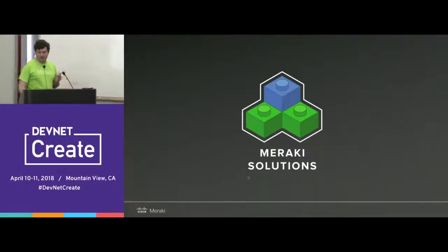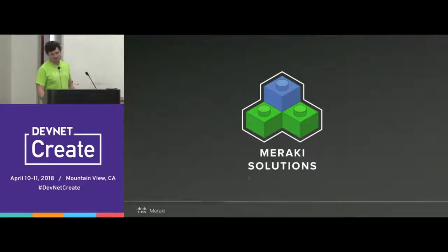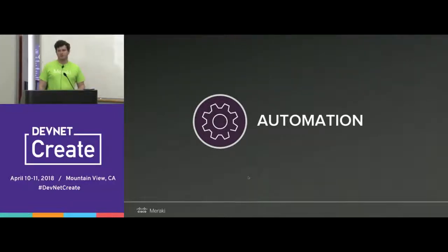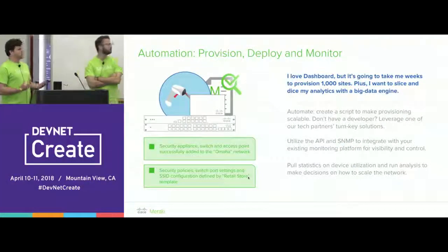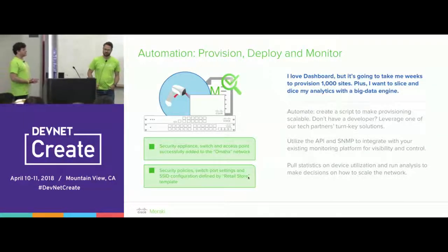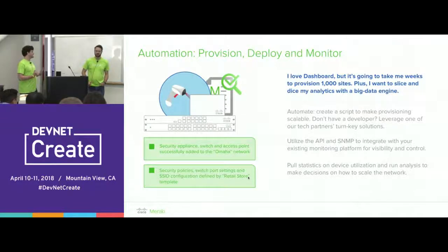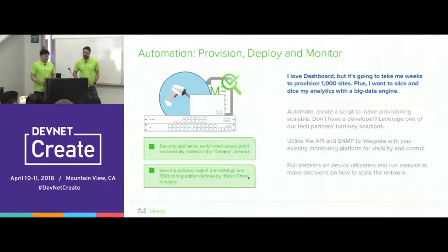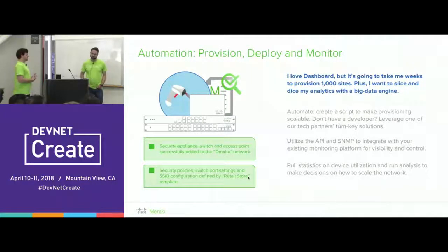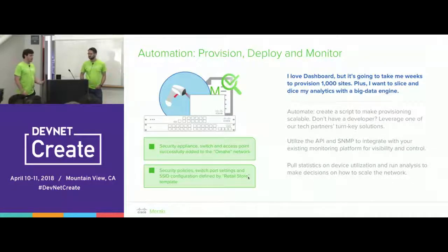Let's look at some solutions. Starting with automation: when it comes to scaling, people may love the dashboard but need to provision a thousand sites, or want to slice and dice data from their network. The Meraki API lets you script large-scale deployments, and you can use a combination of API and SNMP to monitor networks and pull statistics across all your sites — provisioning, deploying, and monitoring much more efficiently.